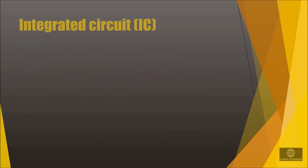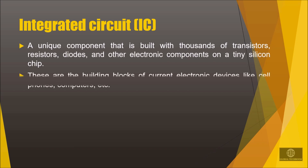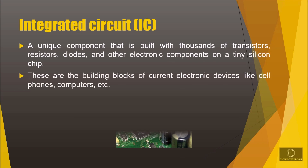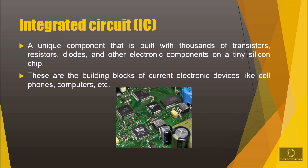An integrated circuit is a unique component that is built with thousands of transistors, resistors, diodes, and other electronic components on a tiny silicon chip. These are the building blocks of current electronic devices like phones and computers. It can function as an amplifier, oscillator, timer, or even as a computer memory. These extremely small electronics can perform calculations and store data using either digital or analog technology.